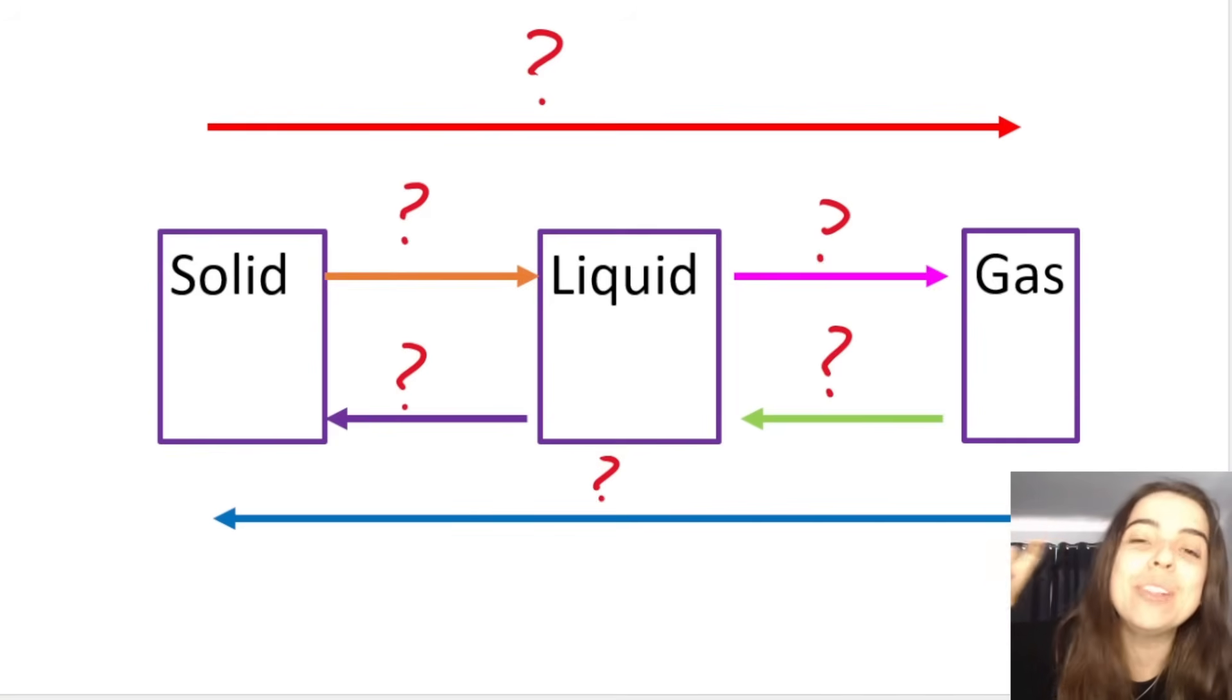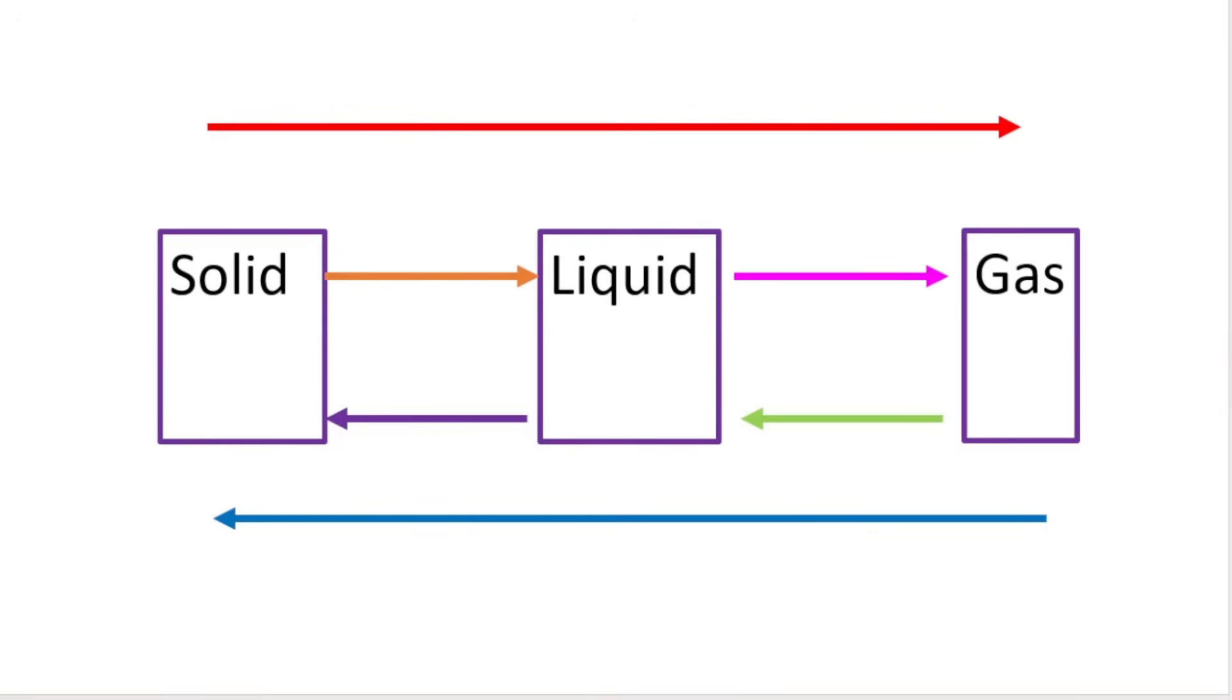See if you can fill in these phase changes with me. So if I go from a solid to a liquid, that is called melting. So we take a solid, think about ice. If I go from solid ice, solid water, ice, to liquid water, melting. If I go the other way around, liquid to solid, it's called freezing. You do need to know the names of these phase changes within the kinetic molecular theory.